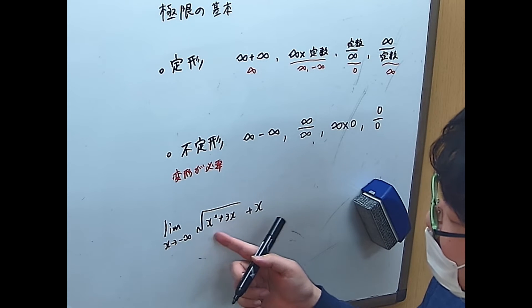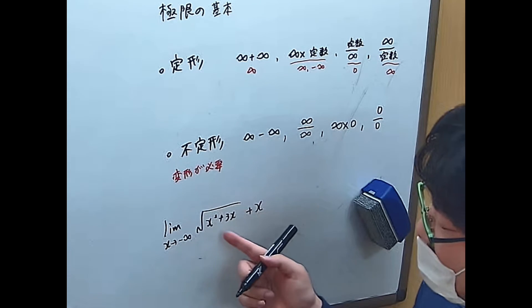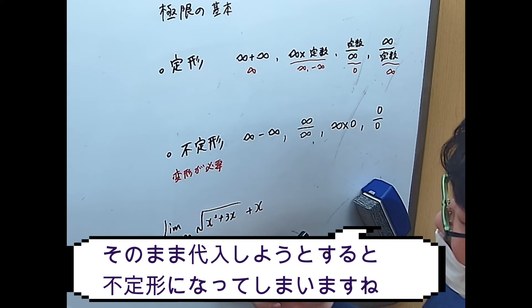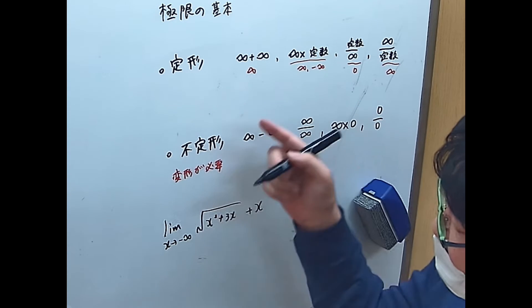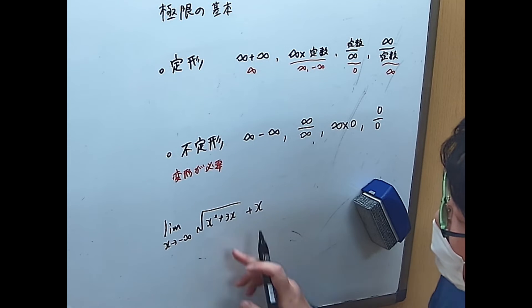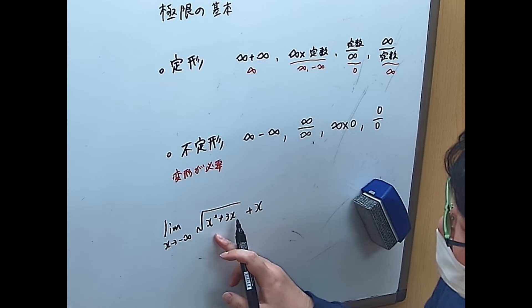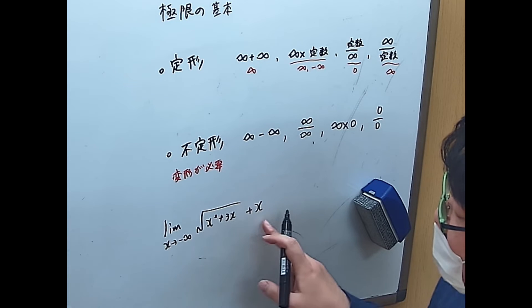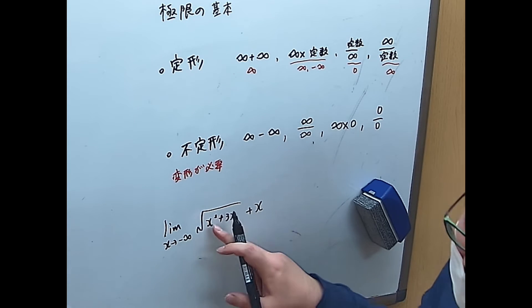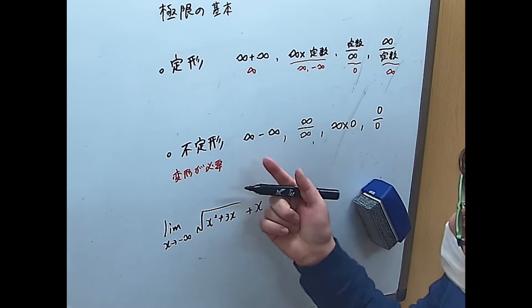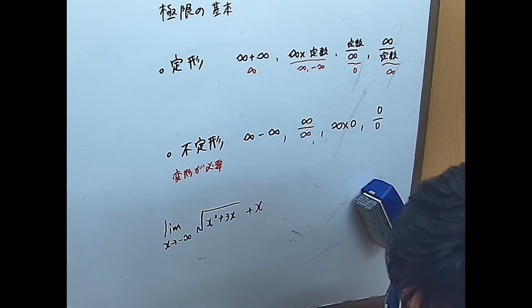ではこれをやってみましょうか。これはマイナス無限でこの関数の極限を出したいんですけど、ちょっと入れてみましょうか。これはマイナス無限を入れると「無限引く無限」になって不定形になります。さらに x²+x のマイナス無限は一応無限なんですけど、それを知っているとしても「無限引く無限」になっているので結局不定形で、これは二重に不定形なんですよ。なので変形が必要ということになります。